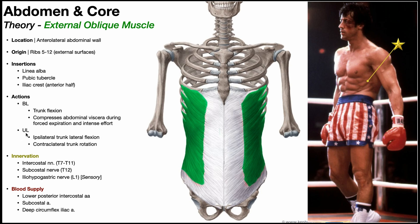For unilateral contraction — let's say the right external oblique is contracting — you get ipsilateral trunk lateral flexion, meaning ipsilateral trunk side bending, and then contralateral trunk rotation. So the right external oblique produces right side bending and left rotation of the trunk. Like the rectus abdominis, the innervation of the external oblique is segmental, receiving contributions from intercostal nerves with roots T7 to T11, and also from the subcostal nerve at T12.